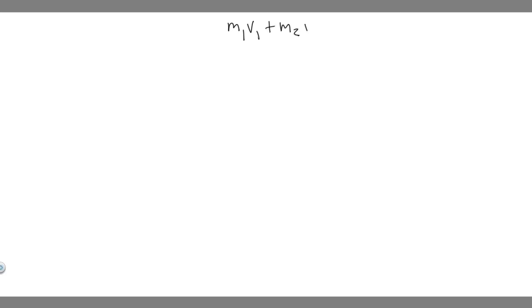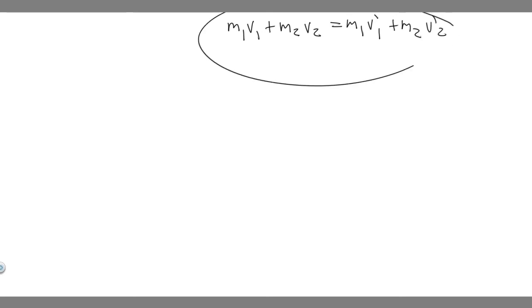In order to solve an elastic collision problem like this, there are two formulas you need to know. The first formula is: m₁v₁ + m₂v₂ = m₁v'₁ + m₂v'₂, where the apostrophe just means final. So the mass of your first object times its final velocity plus the mass of your second object times its final velocity. This is equation one.